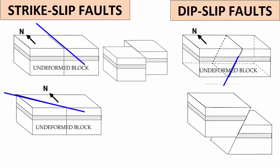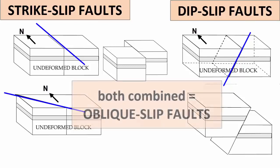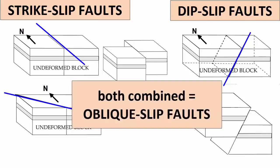Faults that have planes that dip at an angle between horizontal and vertical, and thus have vertical slip, are called dip-slip faults. Faults that experience movement along strike and along dip — the combination of the two — are called oblique-slip faults.